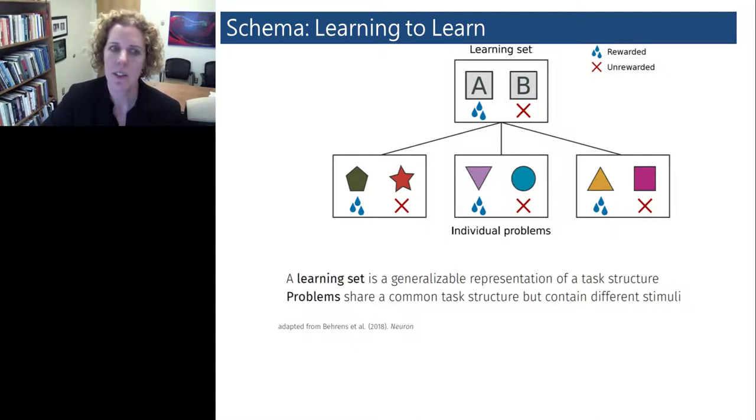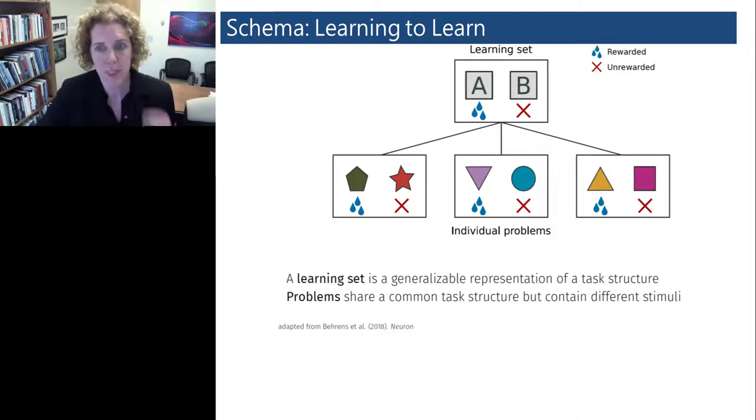A learning set can also involve commonalities in the structure of the decision or choice space that the subject might be making, commonalities in the temporal structure of the trial, including aspects like when to expect stimuli or delays and when the subject is able to make their choice. There could be commonalities in the computational structure, including what kind of information is important to maintain in working memory and how to map that information onto choices.